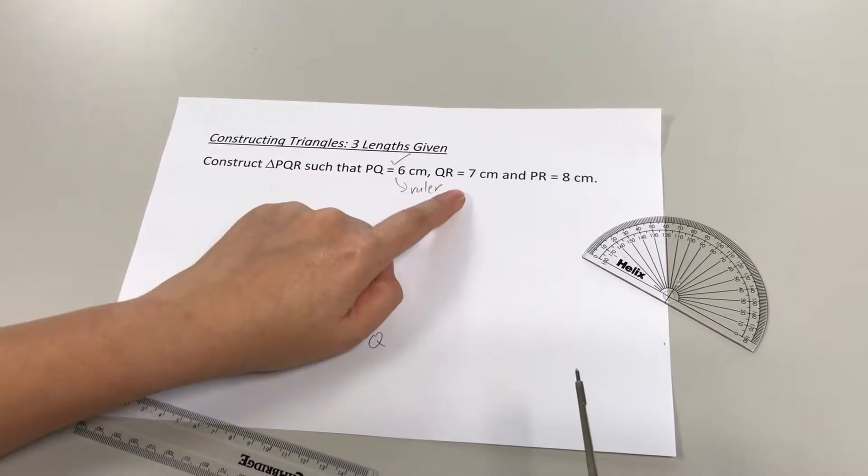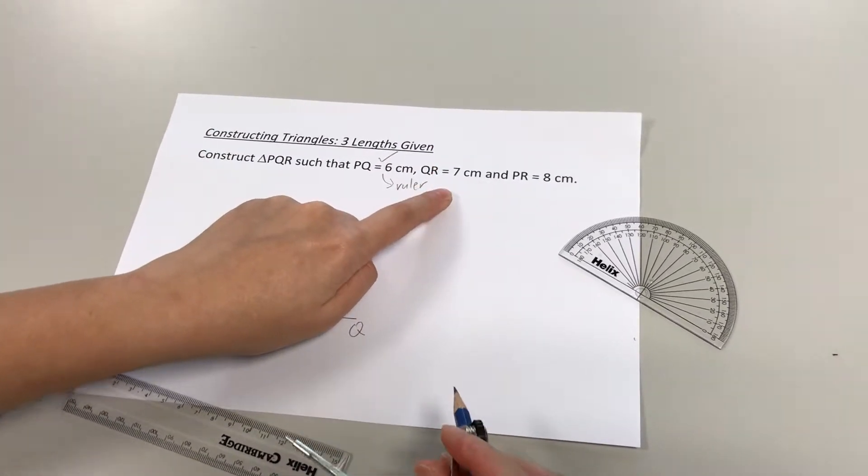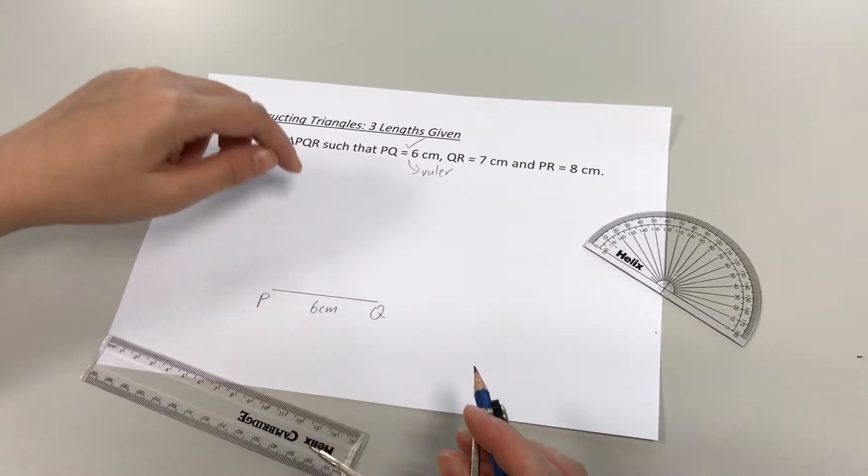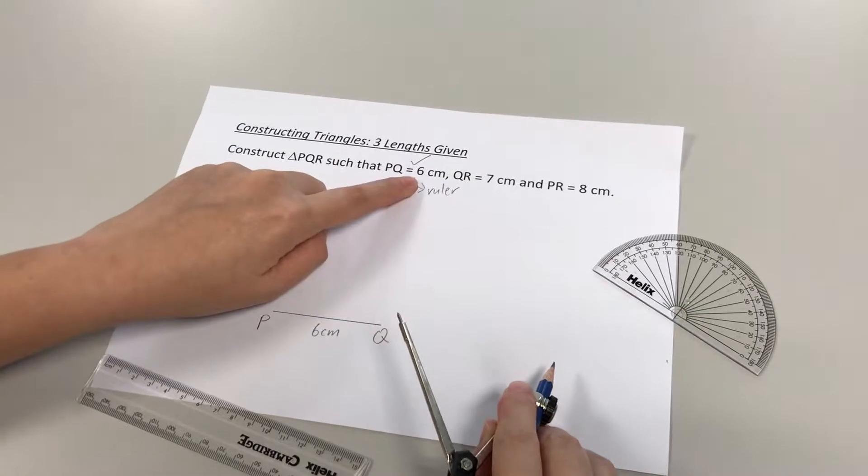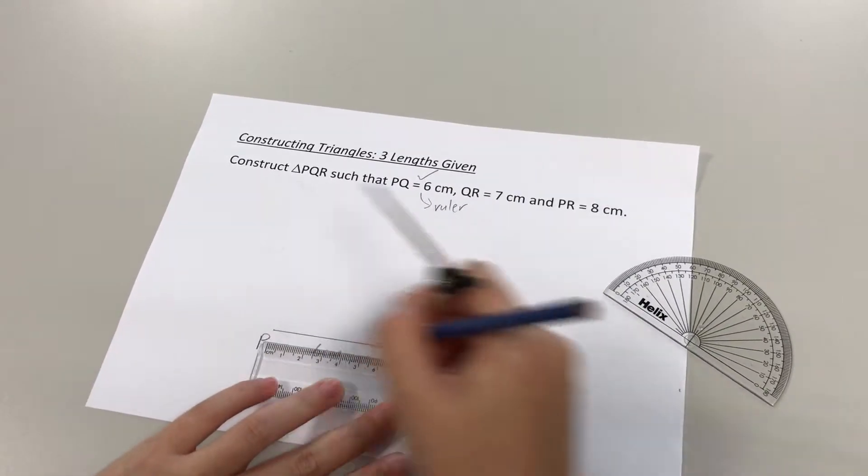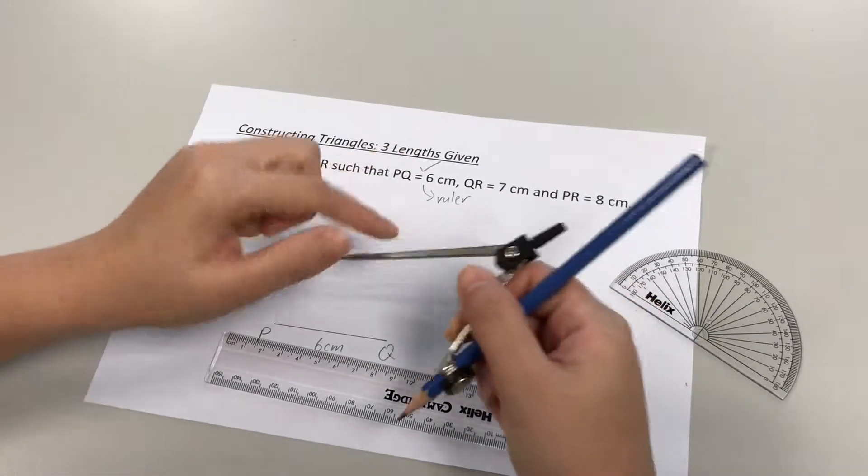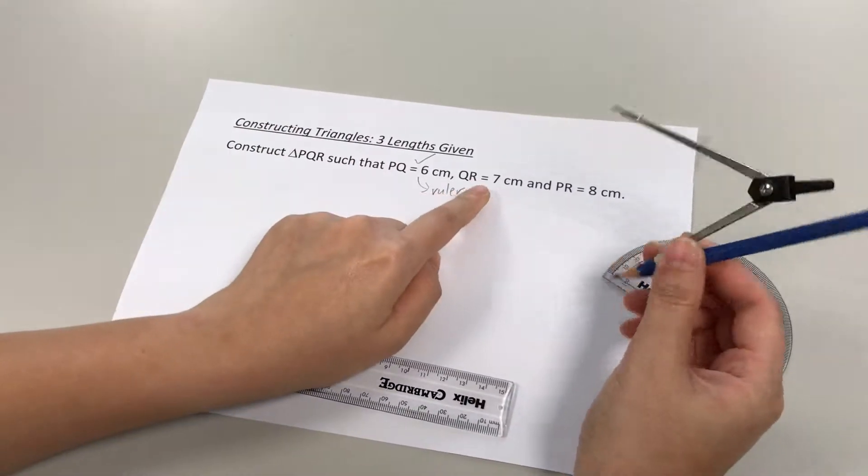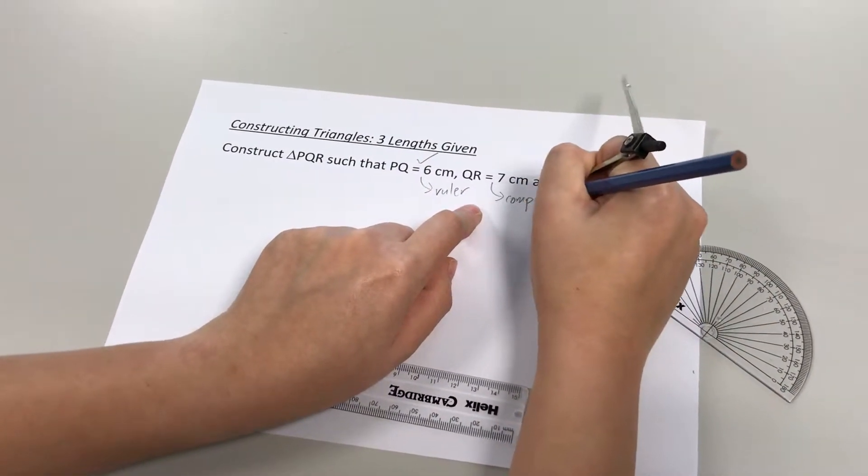Let's move on to the next info, QR 7cm. All right, so the most important thing to know how to draw is to make sure you're aware which equipment to use. Okay, only the first length can be drawn using a ruler, which I did just now to measure the length. All other lengths given, you have to make sure you use your compass. Okay, so QR 7cm has to be drawn using your compass.